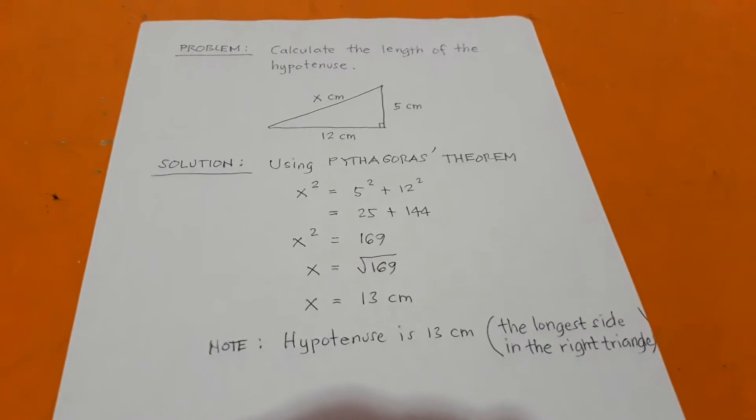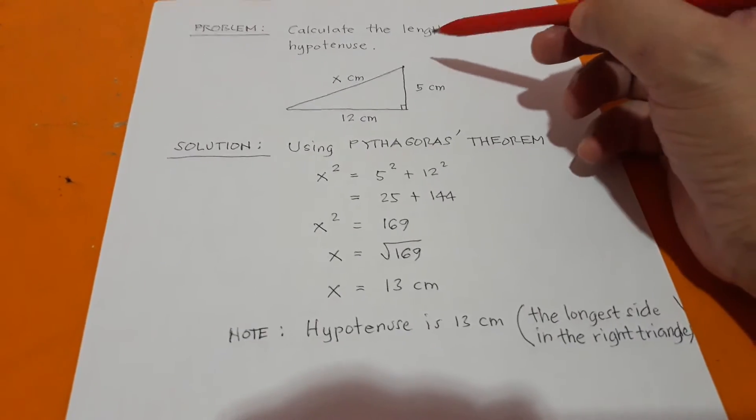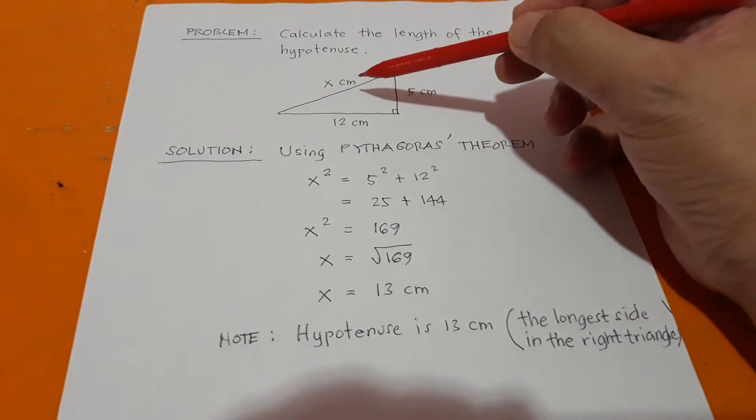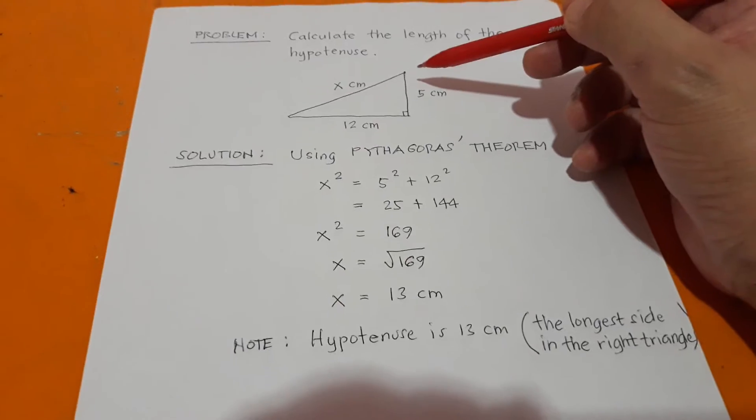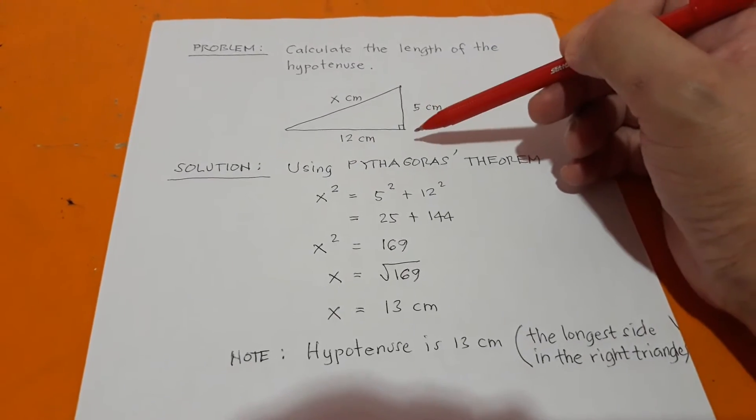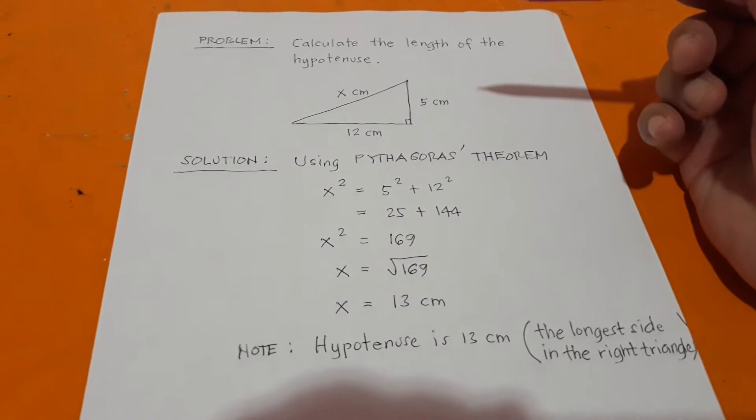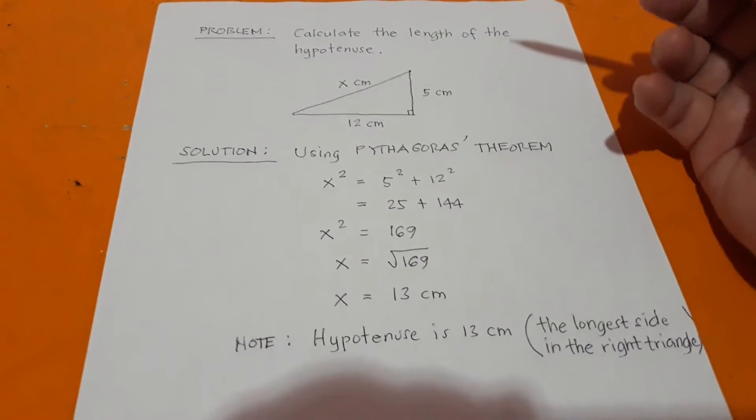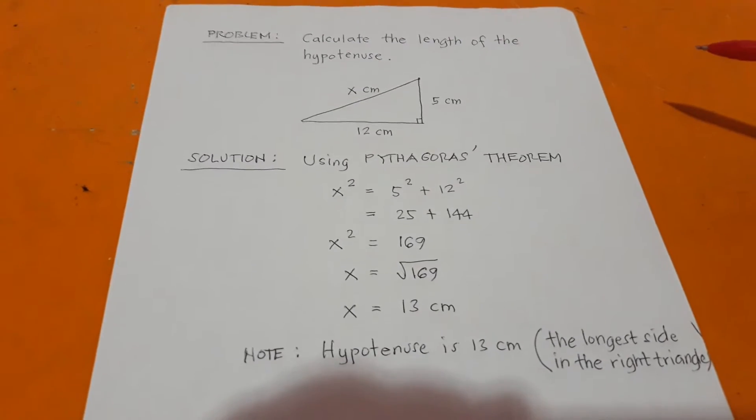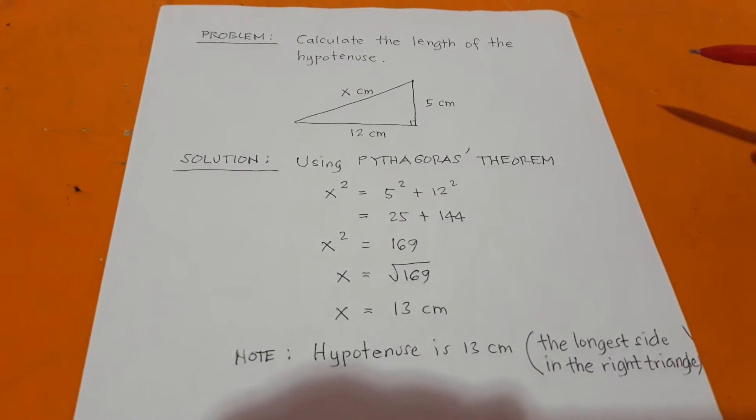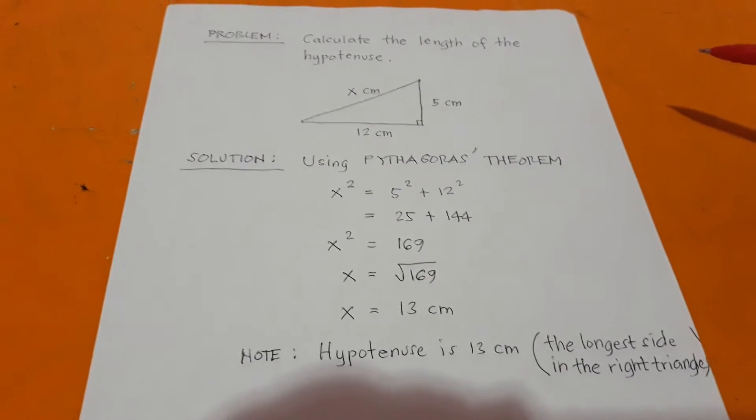You are given a right triangle here with the longest side x centimeters and the other two shorter sides 5 and 12 centimeters respectively. Using Pythagoras' Theorem, we can find the hypotenuse x in centimeters.